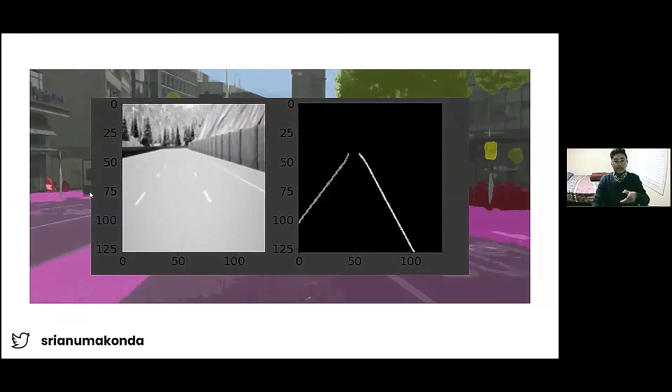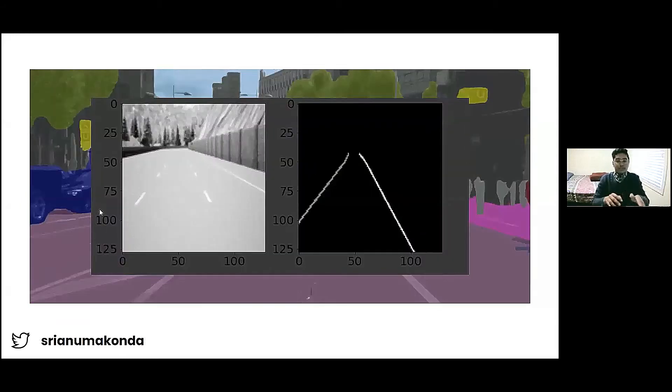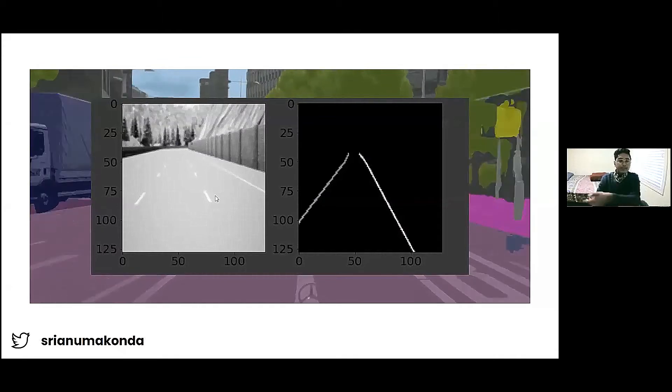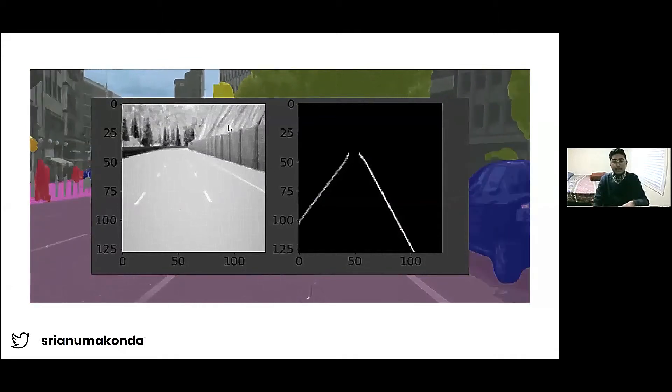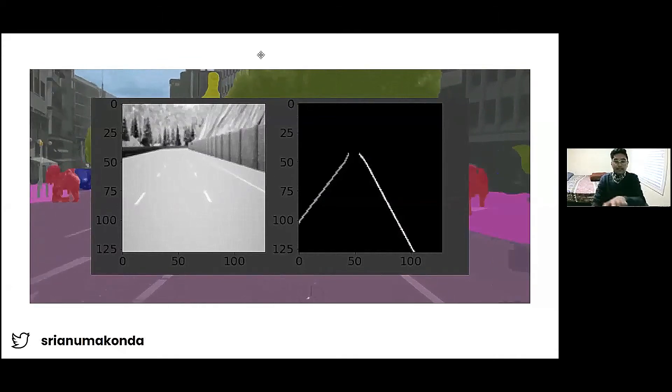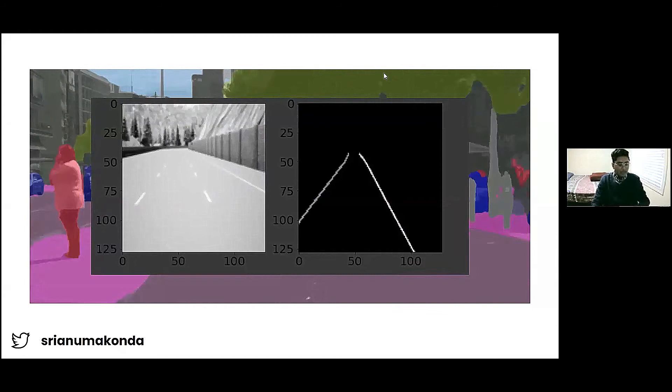In my case, I have road images that are classified into lanes. This is an example image from my dataset where I'm given a road image and its corresponding label.